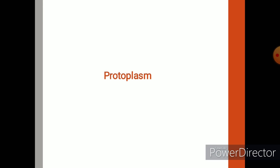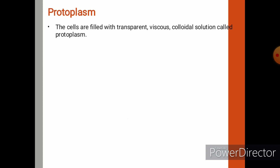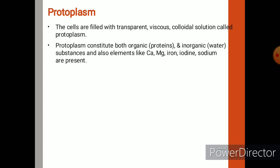Now let us know about the protoplasm. Plant cells are filled with a transparent, viscous, and colloidal solution called protoplasm. Viscous means a substance having thick and sticky consistency between solid and liquid — a jelly-like nature. Colloidal means it is a mixture in which soluble and insoluble particles are suspended in another substance. The protoplasm contains both organic and inorganic substances.